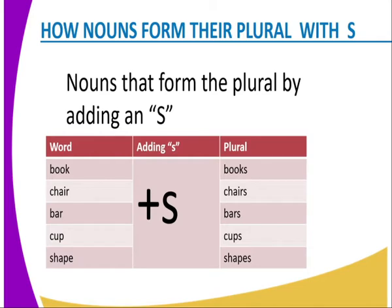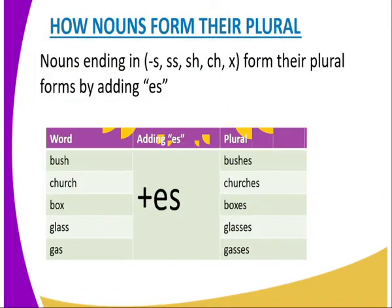Today we're going to look at how nouns form their plural. We'll start by saying nouns form their plural by adding an S. For instance, we have the word 'book' — with the addition of S we have 'books'. Other examples: chair to chairs, bath to baths, cup to cups, shape to shapes.